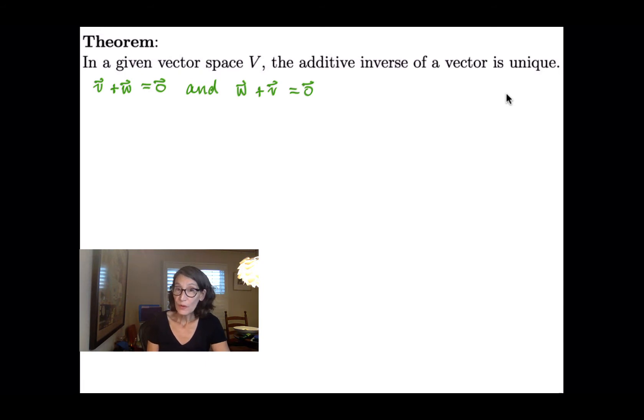And remember, that zero with a hat on it, or that arrow on top, that does not mean the number zero, or an ordered pair, or ordered triple.